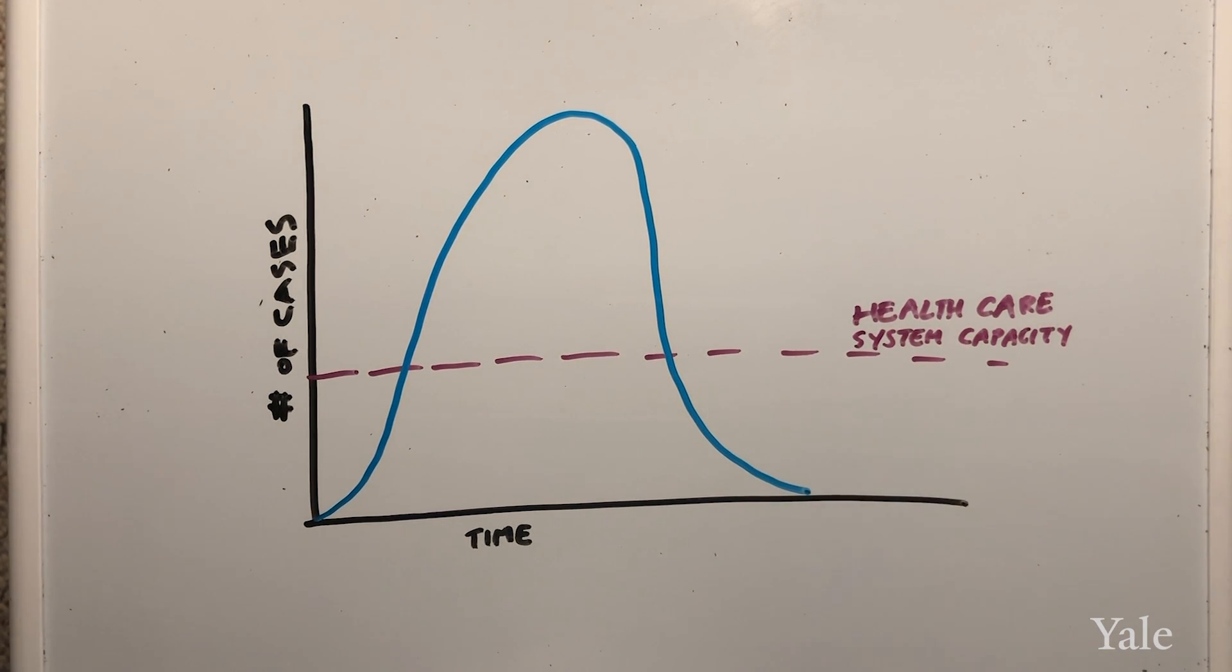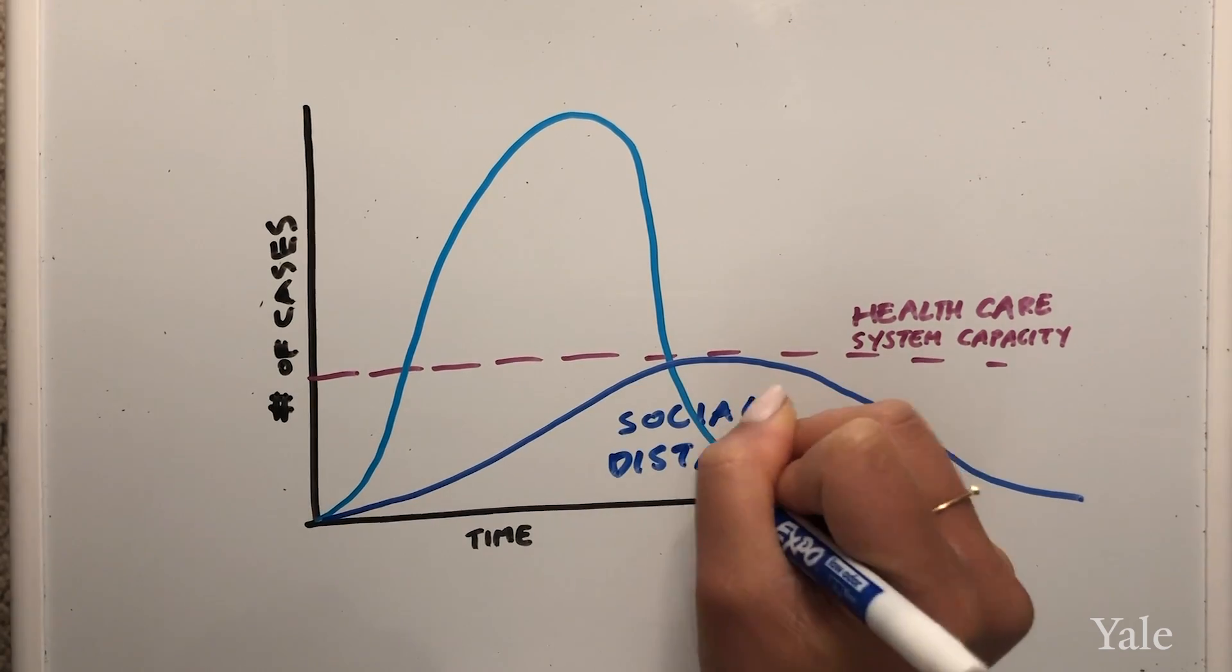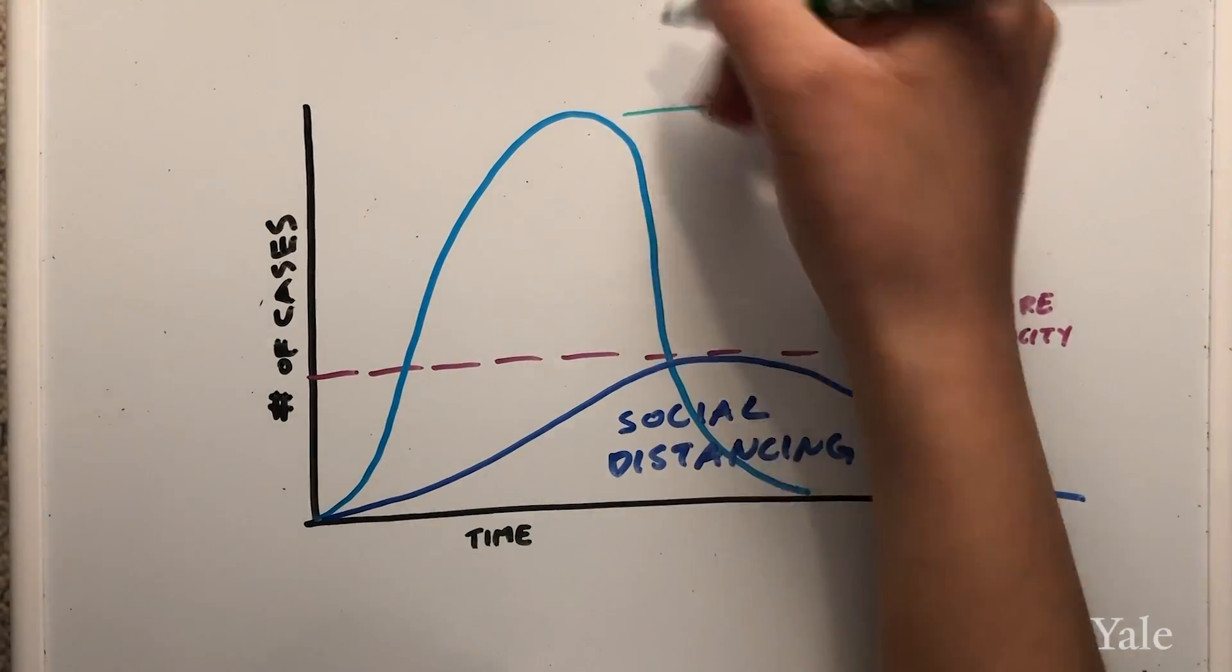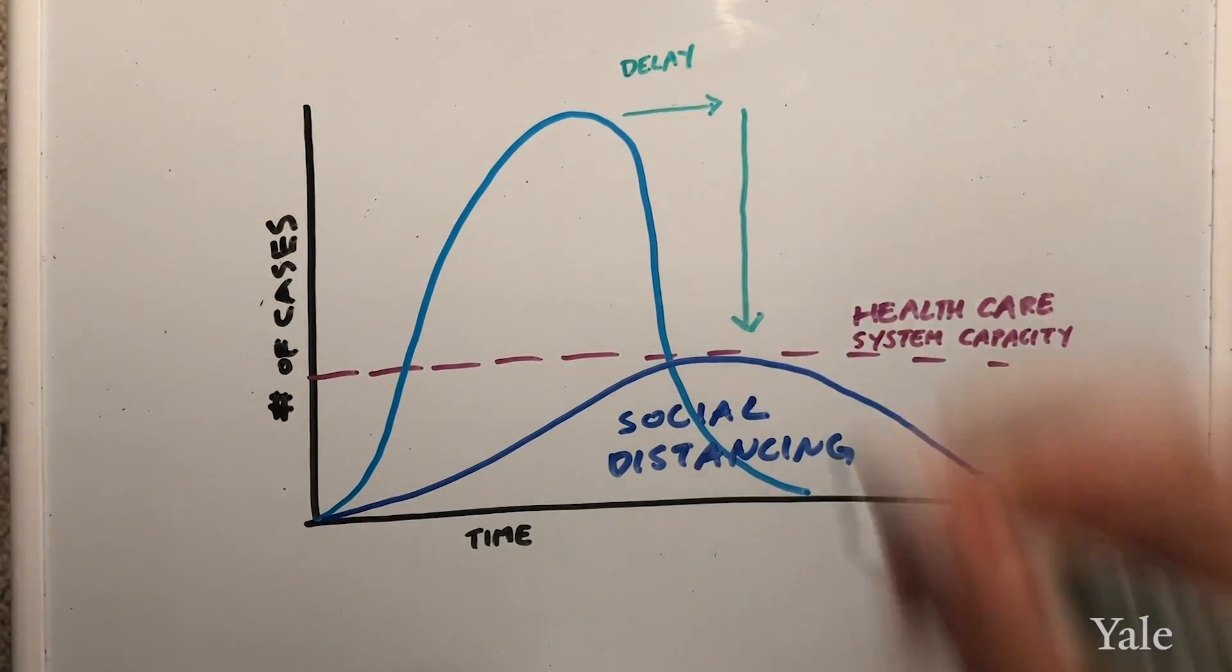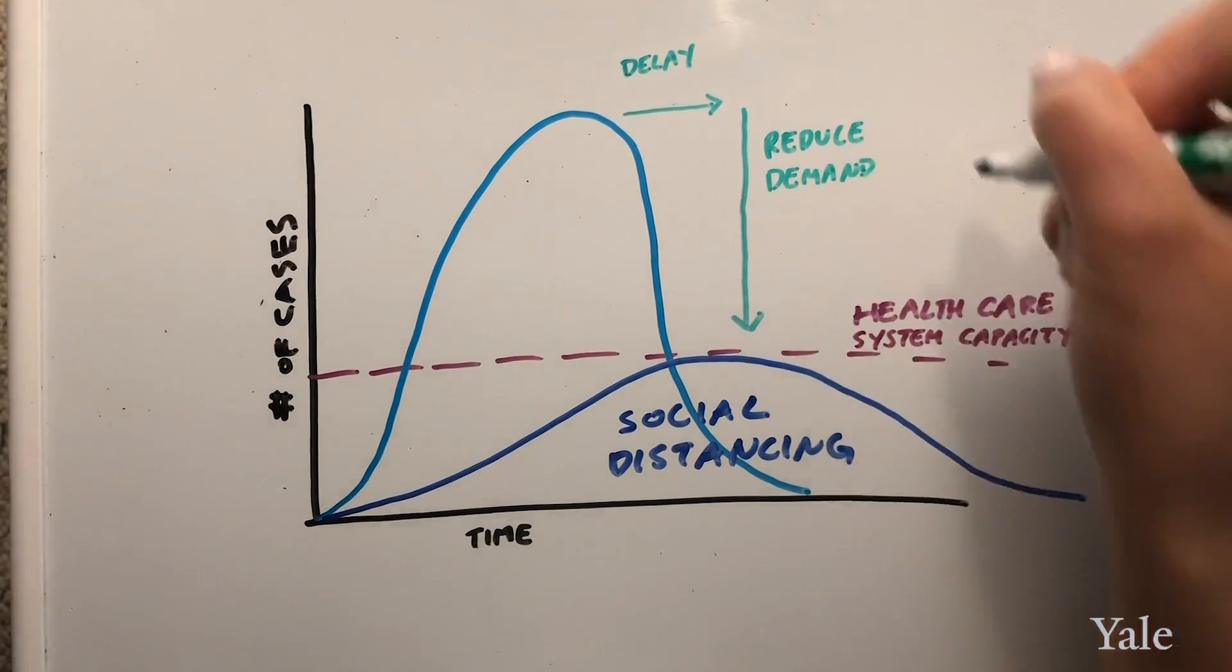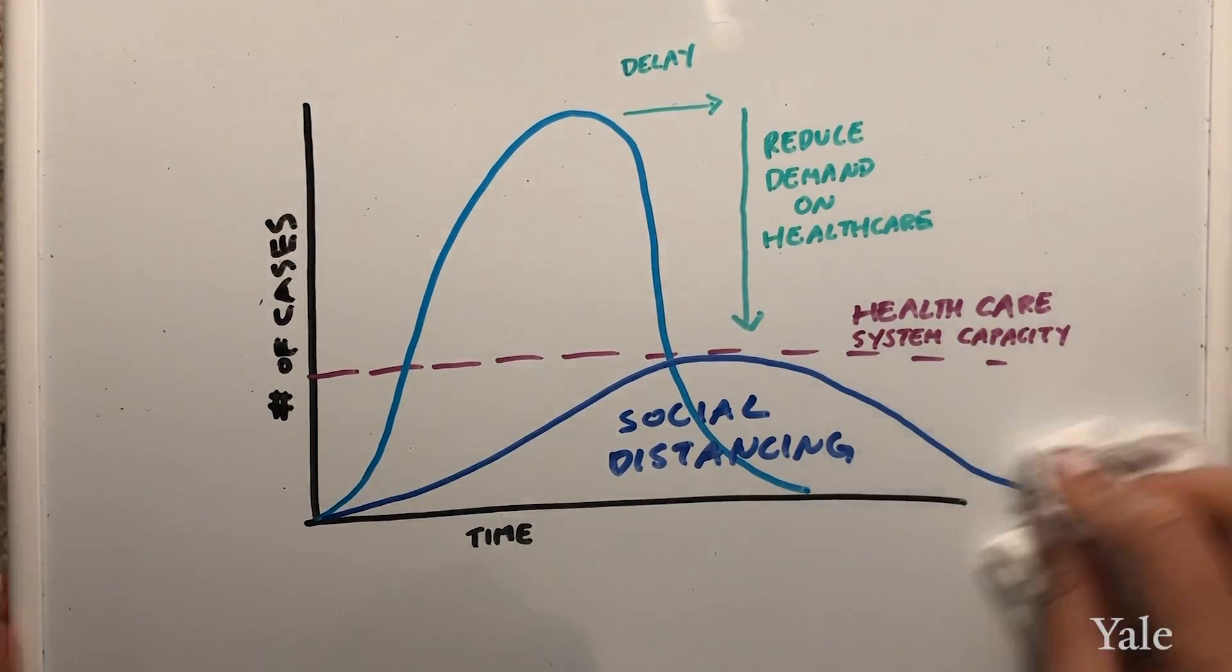If everyone gets sick in a short period of time this quickly oversaturates the health care system meaning we won't have enough resources to save the lives of those who can die from this infection. But if everyone stays home we can delay the number of cases over time and help keep the health care system from oversaturating so we can help as many people as possible.